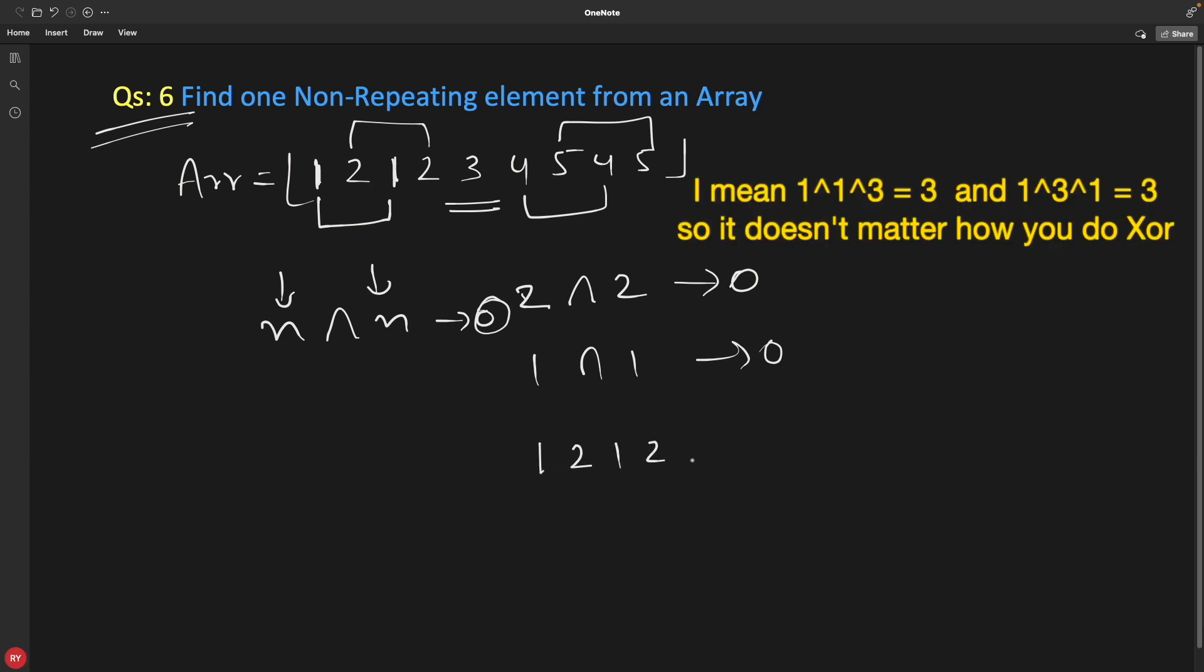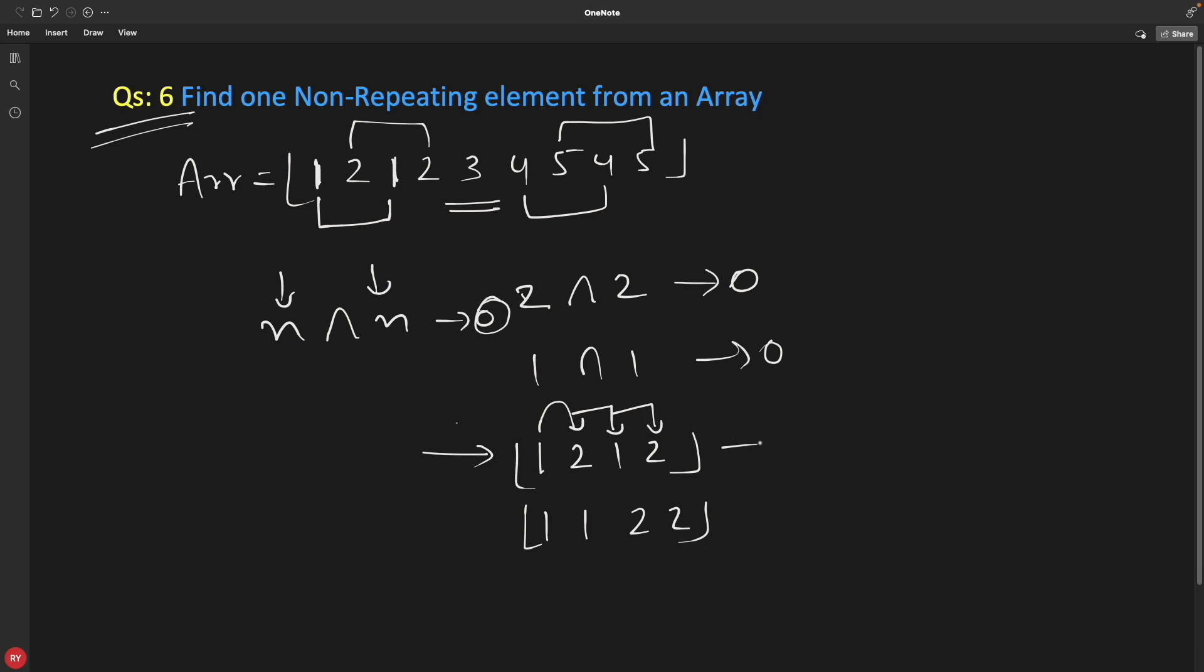The best part is, if you have this small array 1, 2, 1, and 2, or you have 1, 1, 2, 2, if you do XOR with each and every number, if you apply a for loop in this array and XOR 1 with 2, whatever comes as result you XOR that result with this one, and then whatever comes you XOR that with this 2, the result would still be 0.